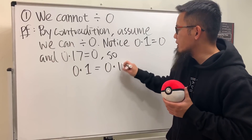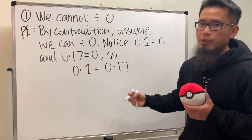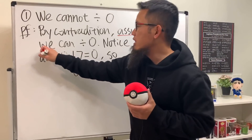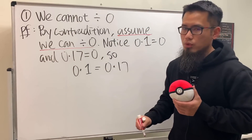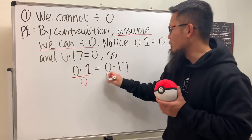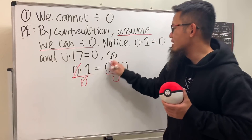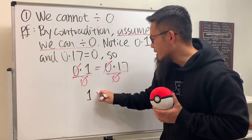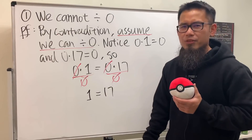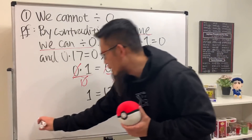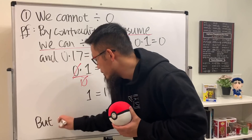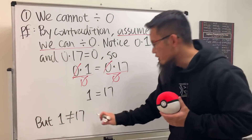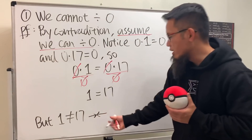Therefore, zero times 1 must equal zero times 17. Now, using our assumption that we can divide by zero, let's divide both sides by zero. The zeros cancel and we get 1 equals 17. We know that's not correct, so 1 ≠ 17.